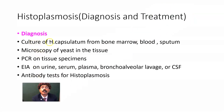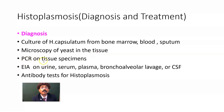For diagnosis: culture of Histoplasma capsulatum from bone marrow, blood, sputum, or even gastric contents (since people swallow sputum). Microscopy of the yeast in tissue, PCR on tissue specimens, enzyme-linked immunoassay on urine, serum, plasma, bronchoalveolar lavage, or CSF. Antibody testing for histoplasmosis is also available.